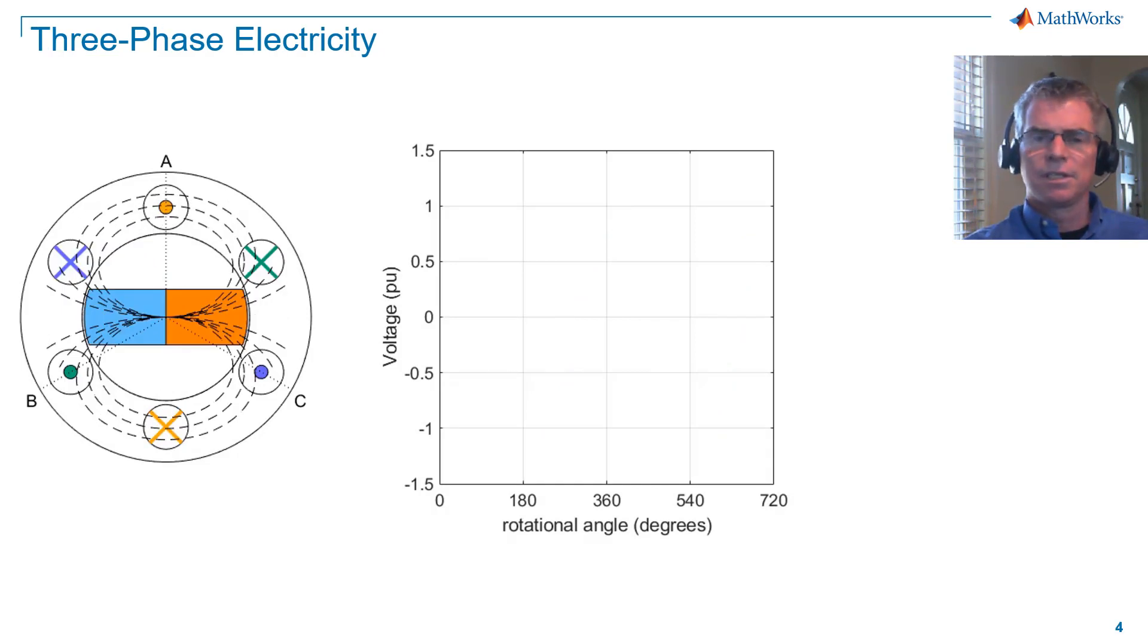For a three-phase system, we add two additional coils to the stator, each of which are separated by 120 degrees. We label the coils as A, B, and C.